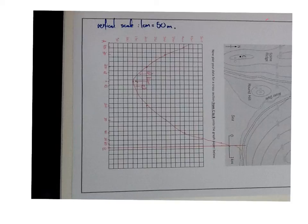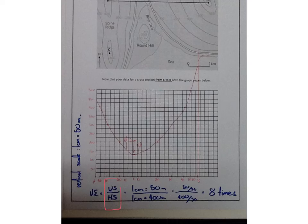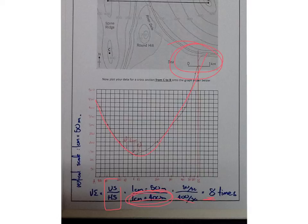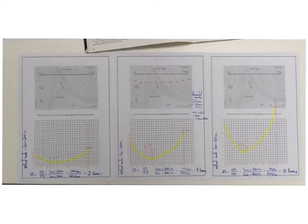For the third cross-section, I changed the vertical scale again — it's going up in fifties, so one centimetre equals fifty metres. Hopefully you can see that the profile is more exaggerated. The formula stays the same: vertical scale over horizontal scale, one centimetre equals fifty metres over one centimetre equals four hundred metres. Dividing fifty into itself gives one, and four hundred divided by fifty gives eight — so this cross-section is exaggerated eight times. The profile is far more pronounced and we can see a lot more detail. If you compare the three ordered by vertical exaggeration — two times, four times, and eight times — that comparison becomes clear.